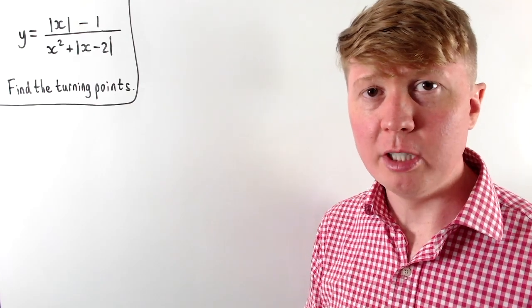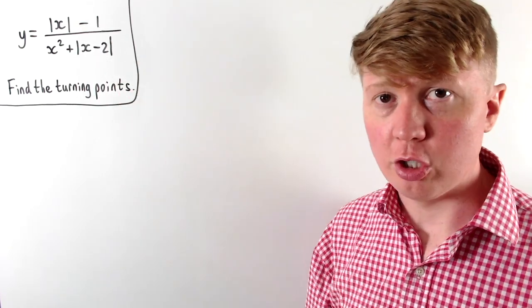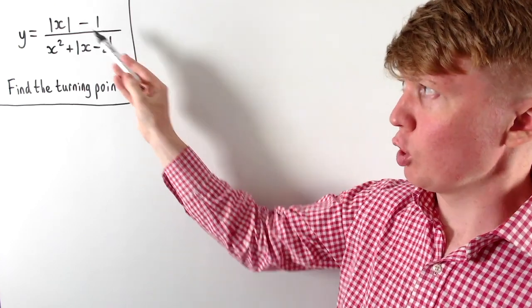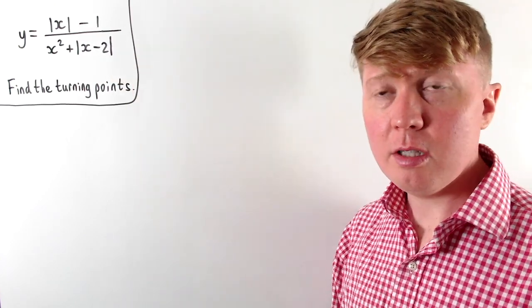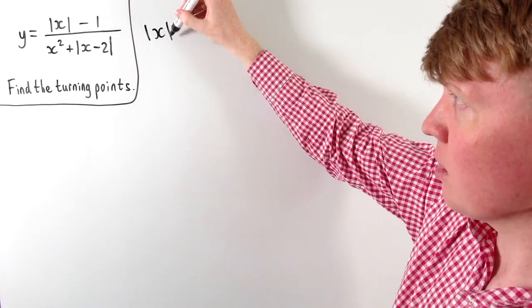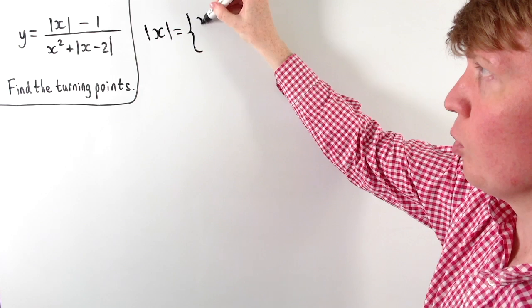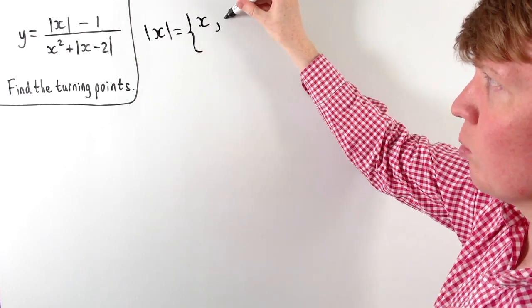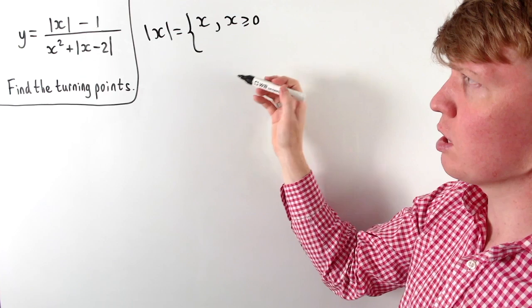We're going to solve this problem where we need to find the turning points of this function. You can see in the numerator and denominator we've got the modulus function. In the numerator, the modulus of x is equal to just x when x is greater than or equal to 0, since putting in a positive number gives the same number back.